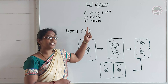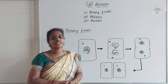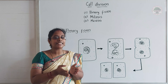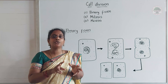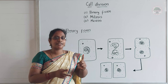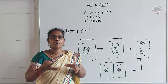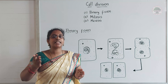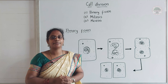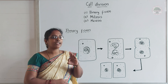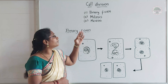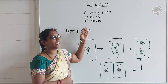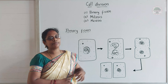Cell division is the process by which cells divide into two. One cell divides into two, two into four, four into eight — and like that, cell division continuously happens. It is of three kinds: the first one is binary fission, the second one is mitosis, and the third one is meiosis.